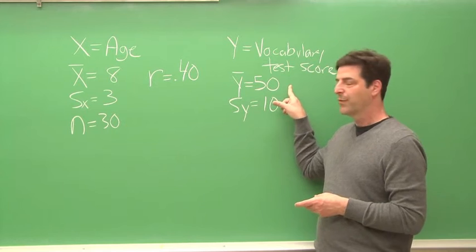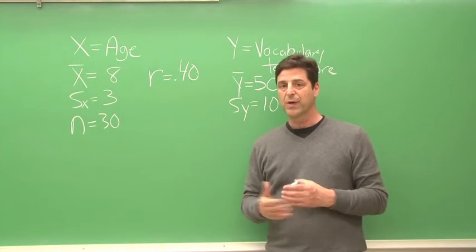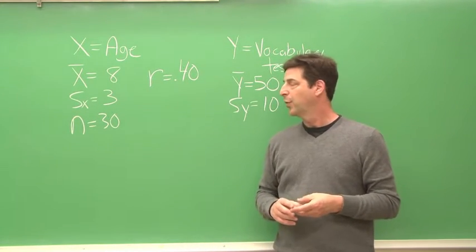Our average score for the vocabulary test is 50 with a standard deviation of 10, and the correlation between age and vocabulary test score is .40, positive .40.